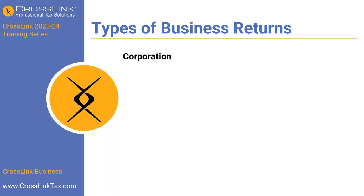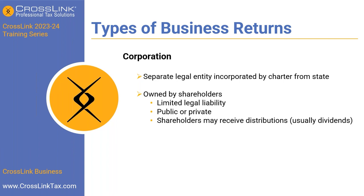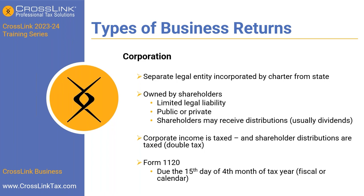The next type of business return is a corporation. These are separate legal entities incorporated by charter from a particular state, owned by shareholders. Corporations have limited legal liability and can be public or private; shareholders may receive distributions, usually in the form of dividends. There is a double tax — corporate income is taxed at the entity level, and then shareholder distributions are taxed again. It's done on Form 1120, and the due date is the 15th day of the fourth month of the tax year.